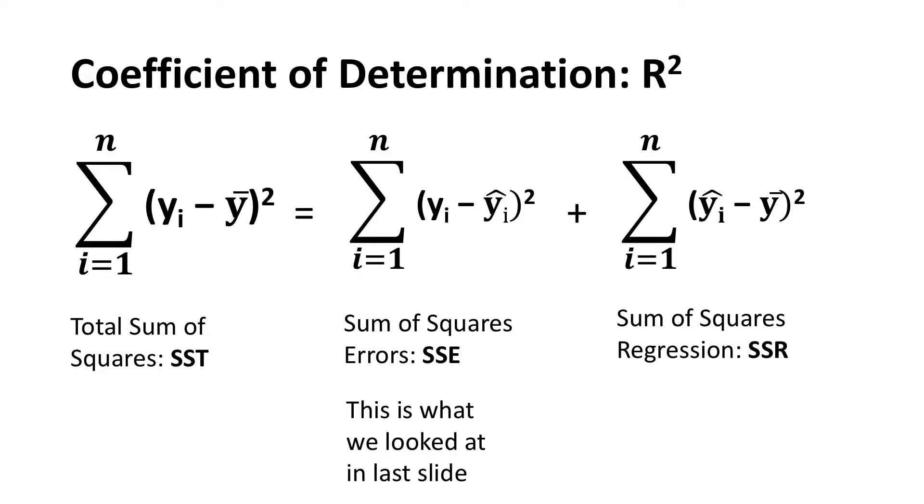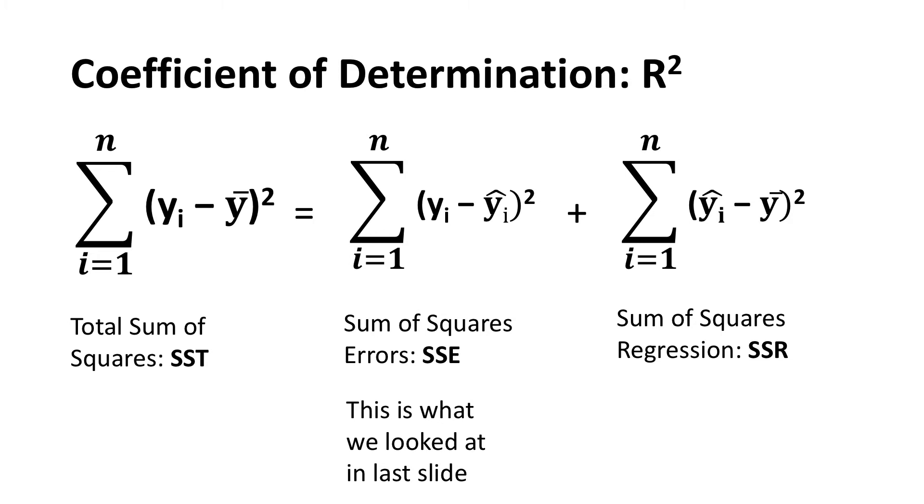And that's equal to the sum of the squared errors. And that's what we looked at on the last slide. That's an indication of the residuals. So it's y_i, that's the value for the observation, minus y_i-hat, which is the predicted value based on the regression model. And you square that. Of course, you sum that for every single observation. And then finally, you have the sum of the squared regressions, which is a predicted value based on the regression model, y_i-hat, minus the mean value of y-bar. And you square that. And of course, you sum that across all the observations.